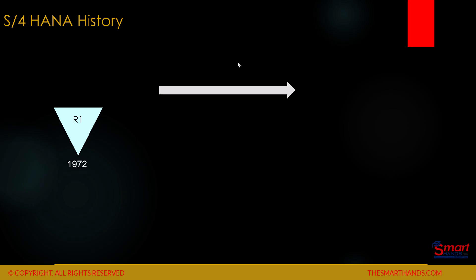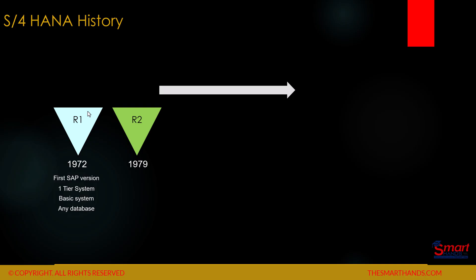Now we'll learn some history about SAP and SAP S4 HANA. SAP was first launched in 1972 and it was called R1 — the very first SAP version, a one-tier system that could run on any database. Then in 1979 they launched R2, a two-tier mainframe system. It was a bit slow, could run on any database, and did not have a very good interface.